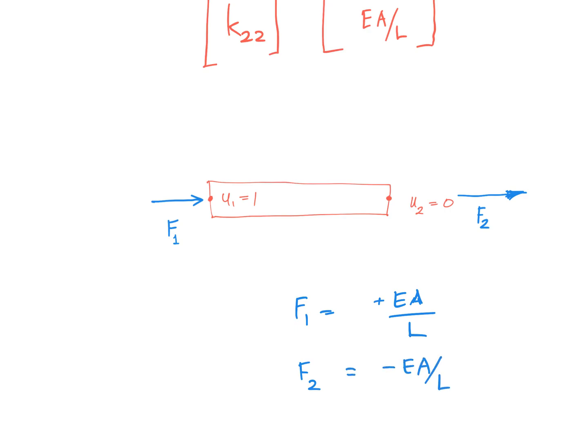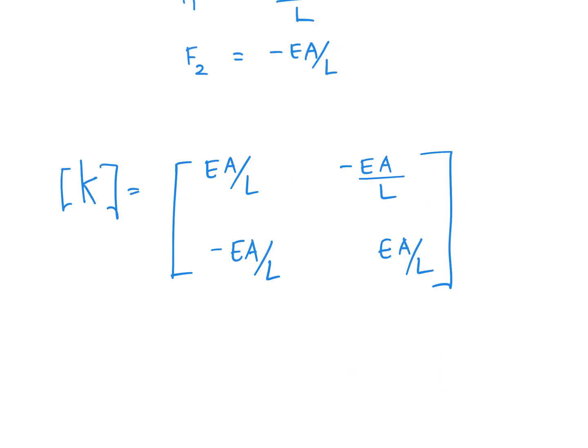Now we are holding this end fixed while we are compressing this end by unity. So what has to be f1 and f2? f1 will be EA/L because this is my positive direction, and for this whole bar to be in equilibrium my f2 has to be minus EA/L. Because I'm pushing this end in this direction, and at this end for this bar to be in equilibrium I should push in this direction. That's why there is a minus sign coming over here. So now we have found out the stiffness matrix completely and it looks like this.